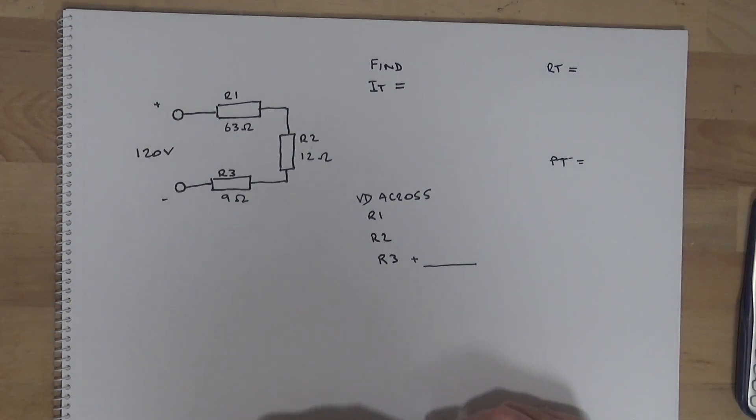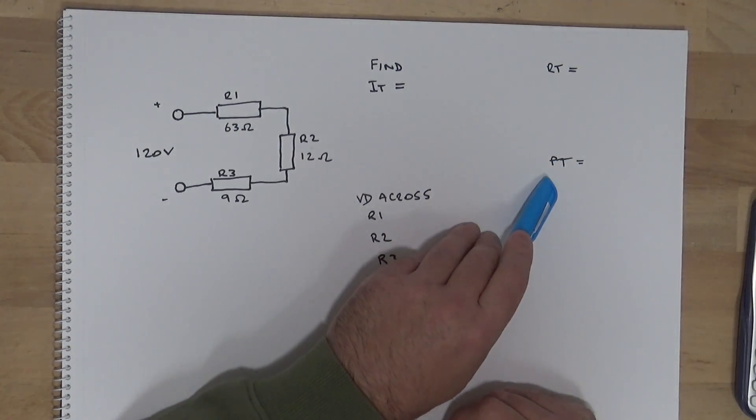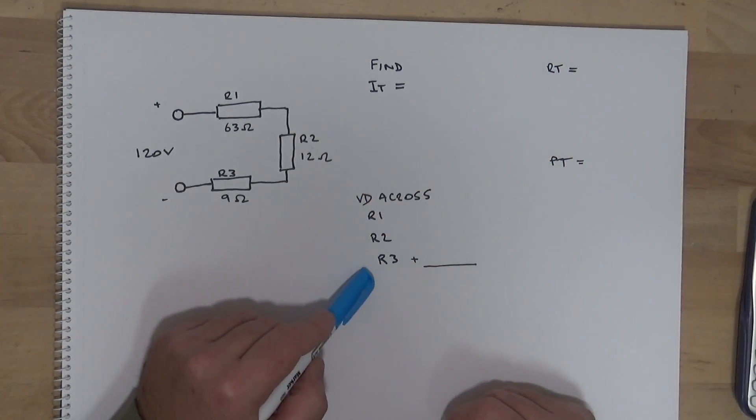All right, we're going to solve these circuits. So we're going to look for the current total, the resistance total, the power total, the voltage across each of these resistors.